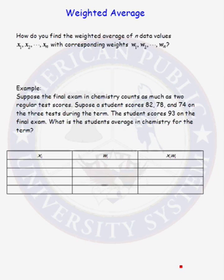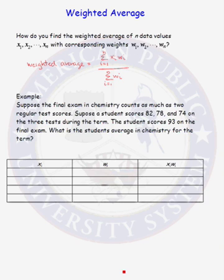Let's talk about how to find a weighted average. How do you find the weighted average of n data values, x1 up to xn, with corresponding weights w1 up to wn? The weighted average is the sum of each data value times its corresponding weight, added up for all data values, divided by the sum of all of the weights.